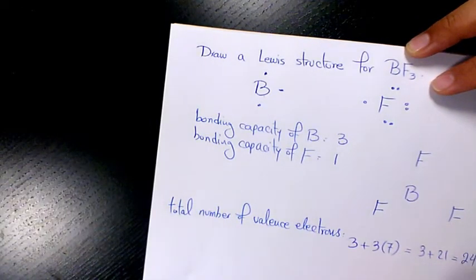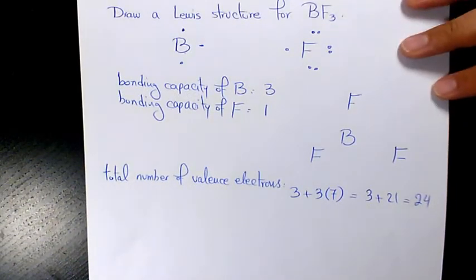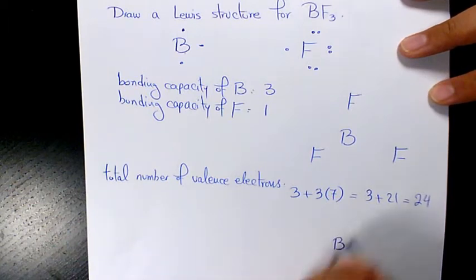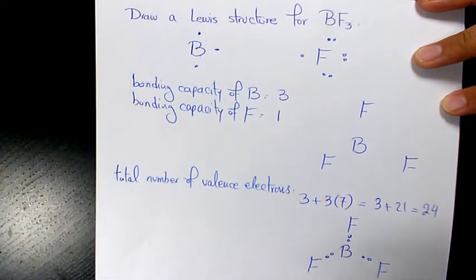Now what I need to do is place one pair of electrons between each adjacent pair of atoms. So we have B-F, F, and F: one-two, one-two, one-two.